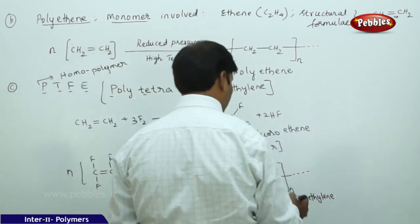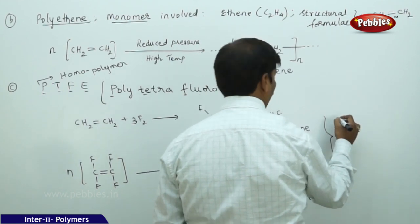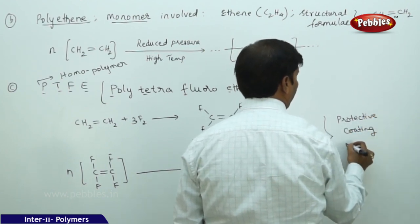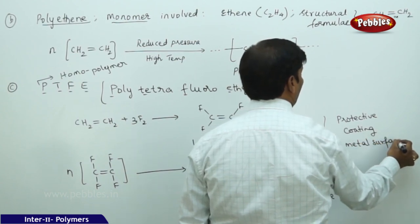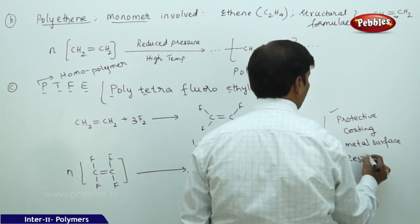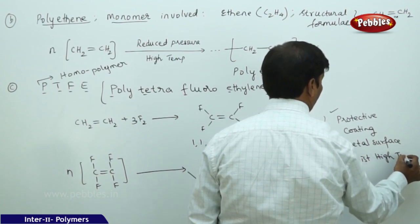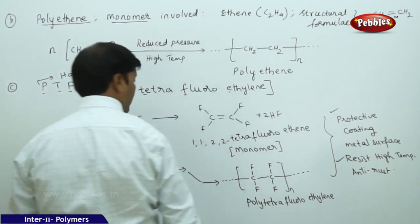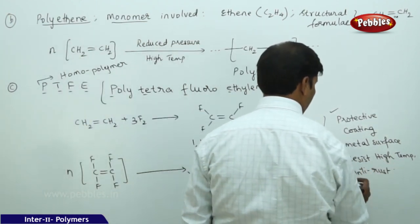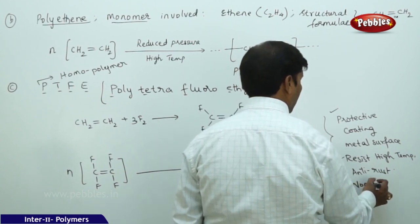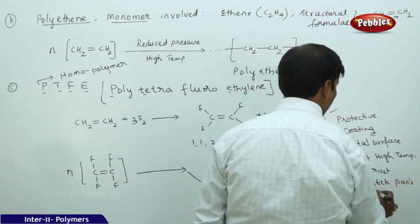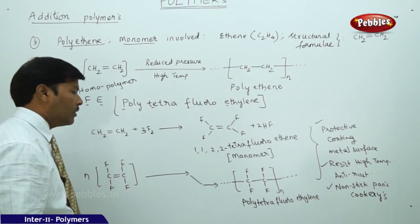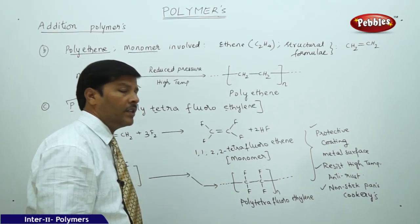The most important application of poly tetrafluoroethylene (PTFE) is that it acts as a protective coating on metal surfaces, resisting high temperatures. It is also anti-rust and is used in non-stick pans in cookery.